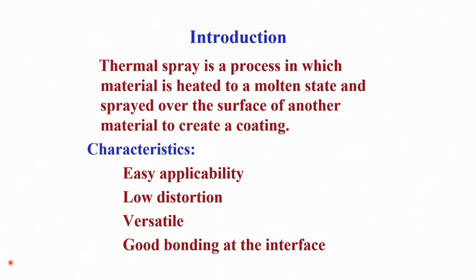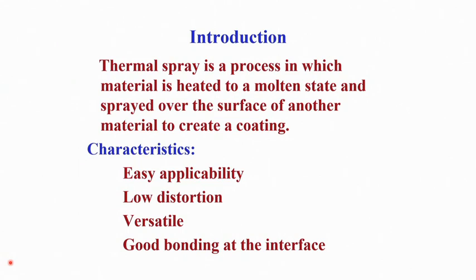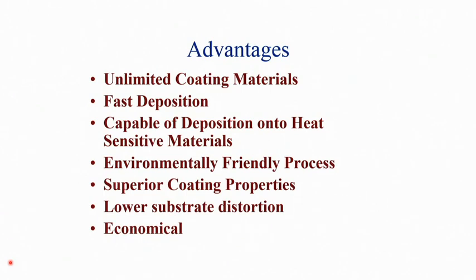As you are depositing by spraying, there is very little distortion of the substrate and there is good bonding at the interface, but bonding is not as strong as in weld overlaying or hot dipping, because the mechanism of bonding is basically mechanical interlocking with very little diffusion at the interface. This technique can be applied for a wide range of materials, from polymeric materials to high melting ceramic materials, and deposition speed is very fast. There is negligible heat affected zone, the process is environment friendly, there are superior coating properties, lower substrate distortion, and it is much more economical compared to high-end processing like laser or electron beam processing. It is also capable of deposition on heat sensitive materials.